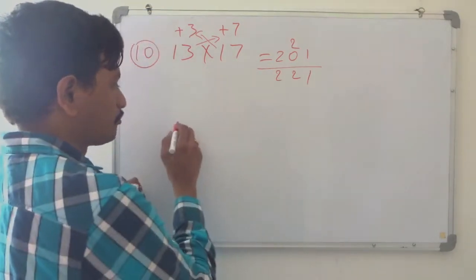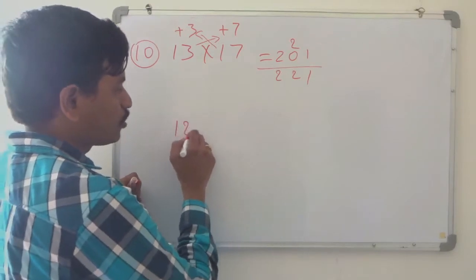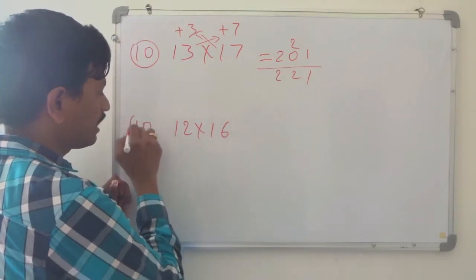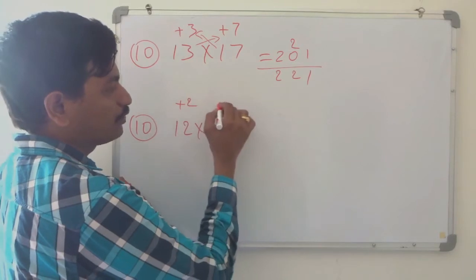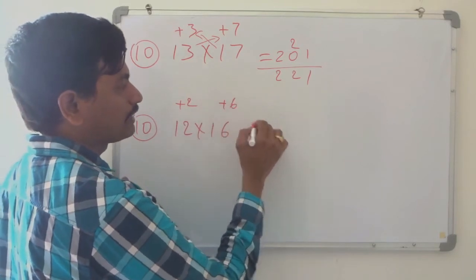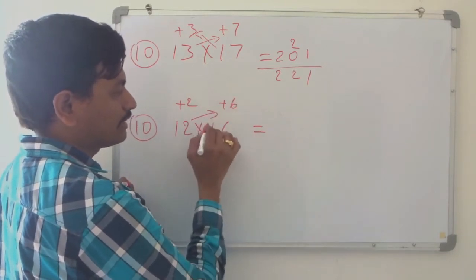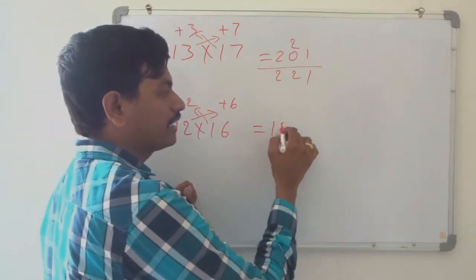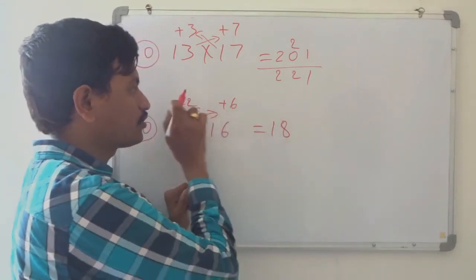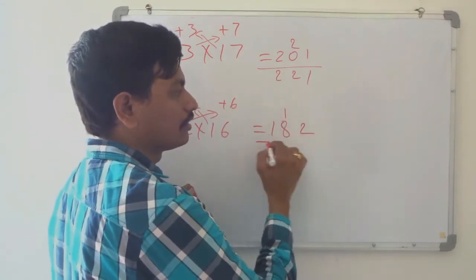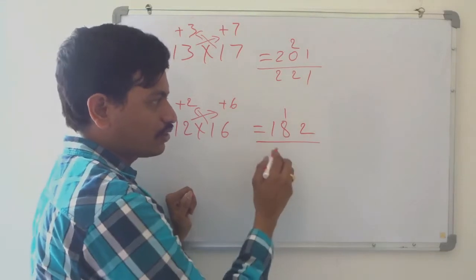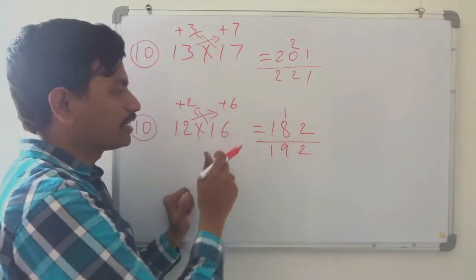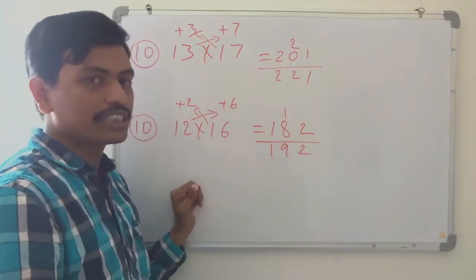Like this we can take another example: 12 into 16. We take the same base 10, plus 2 plus 6. Cross addition: 12 plus 6, or 16 plus 2, both are same — 18. 6 twos are 12. So we need only 1 digit. So the answer is 192, which is the multiplication of 12 into 16.